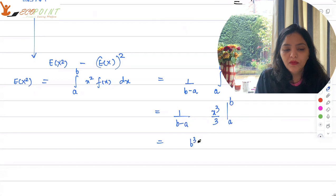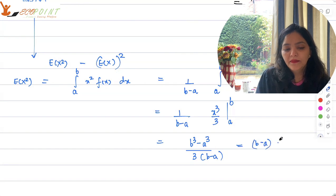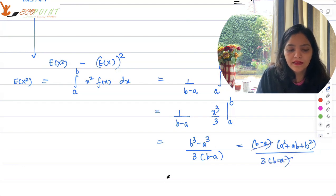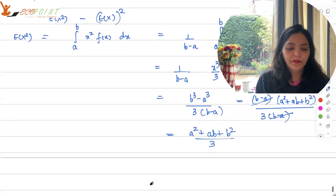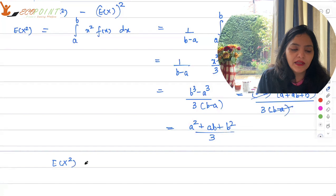So that gives you b cube minus a cube upon 3 times b minus a which is same as saying b minus a, a square plus ab plus b square holding upon 3 times b minus a. This, this cancels and hence you get a square plus ab plus b square holding upon 3. Now you already have e x.